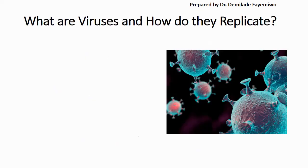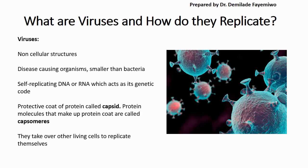The last bit I want to touch on is viruses. Viruses are non-cellular structures. The easiest way to remember what a virus is made of is to know that it is made of genetic material — either DNA or RNA — and it has a protein coat. Viruses attach themselves to living cells within either the body or the plant, depending on what they are trying to infect. They release their DNA into that cell so that the cell's machinery can copy their DNA and make more viral proteins. Viruses are non-cellular, disease-causing organisms, smaller than bacteria. They have self-replicating DNA or RNA and a protein coat called a capsid, which is made up of molecules called capsomeres. They take over living cells to replicate themselves.